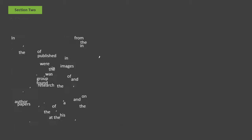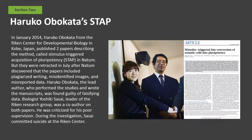In January 2014, Haruako Obokata from the Riken Center for Developmental Biology in Kobe, Japan, published two papers describing the method called Stimulus-Triggered Acquisition of Pluripotency in Nature. But they were retracted in July after Nature discovered that the papers included plagiarized writing, misidentified images, and misreported data. Haruako Obokata, the lead author who performed the studies and wrote the manuscripts, was found guilty of falsifying data.